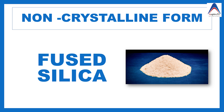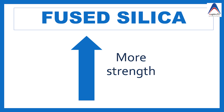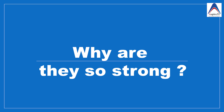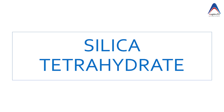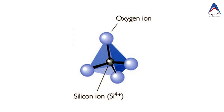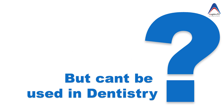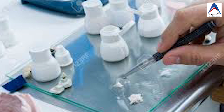The most important advantage of fused silica is that it has very high strength. Fused silica is really strong because of its important structural unit — the silica tetrahedra — which is basically a silicon ion surrounded by oxygen. The reason behind the strength of fused silica is not the ions themselves but the bonds between these ions. However, in spite of being so strong, fused silica cannot be used in dentistry without modification.